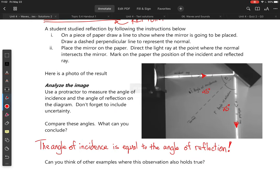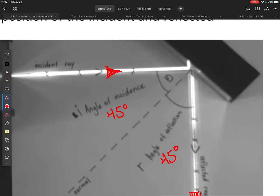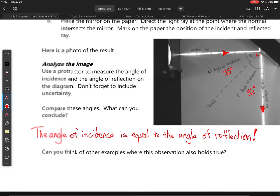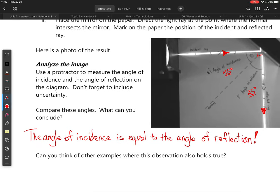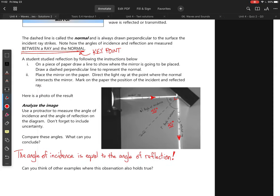So next, a student has studied reflection by following instructions below. You are asked to analyze the image of his work. We have an incident ray and I've drawn a little arrow here to show the direction of the ray which is always a good idea. And I've not measured this with a protractor but I kind of eyeballed it and it looks perpendicular to me, which means that my angle of incidence and my angle of reflection are both going to be 45 degrees. So conclusion, the angle of incidence is equal to the angle of reflection and this is generally true. And by generally I mean always true.